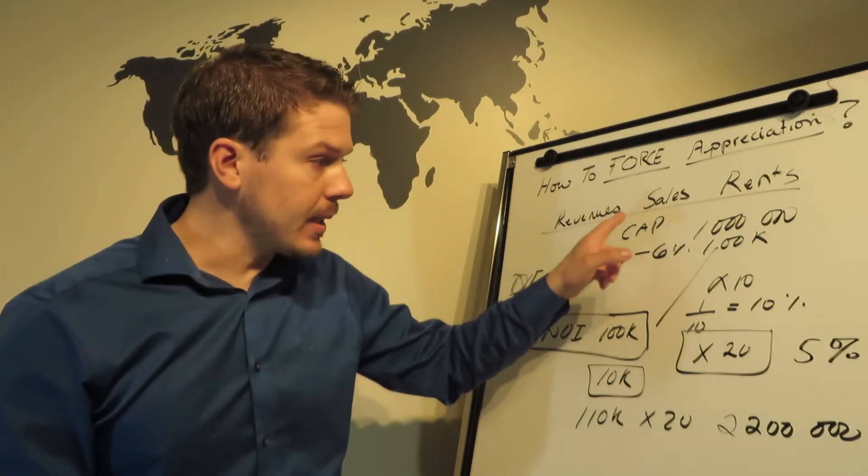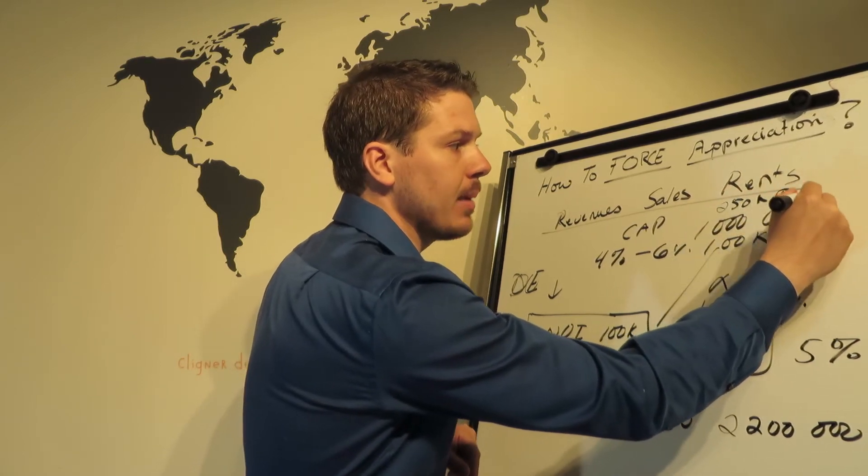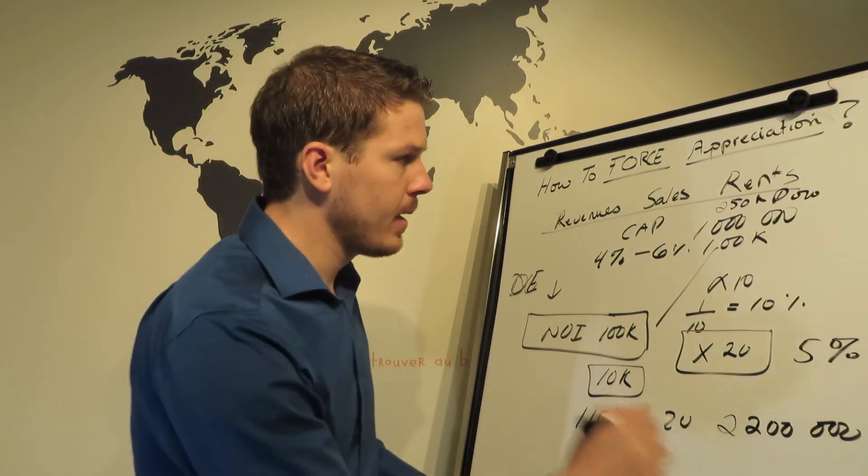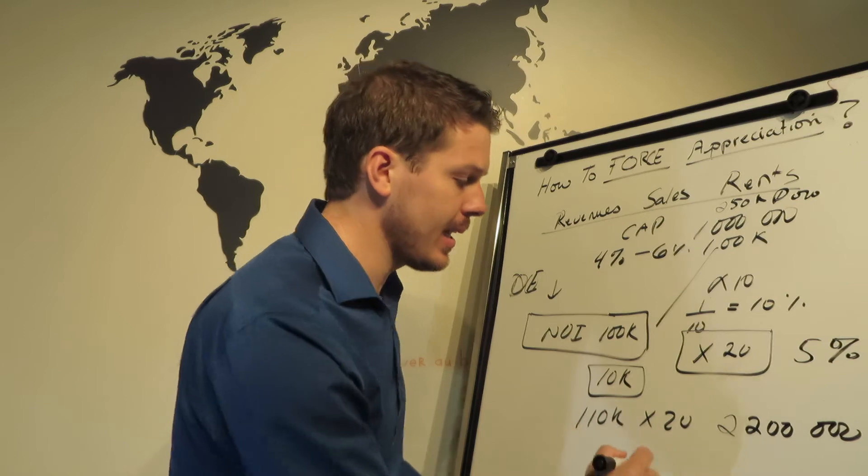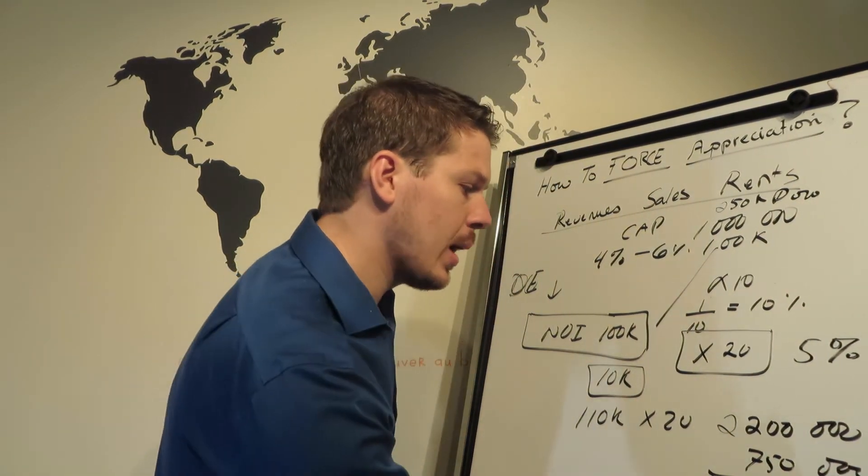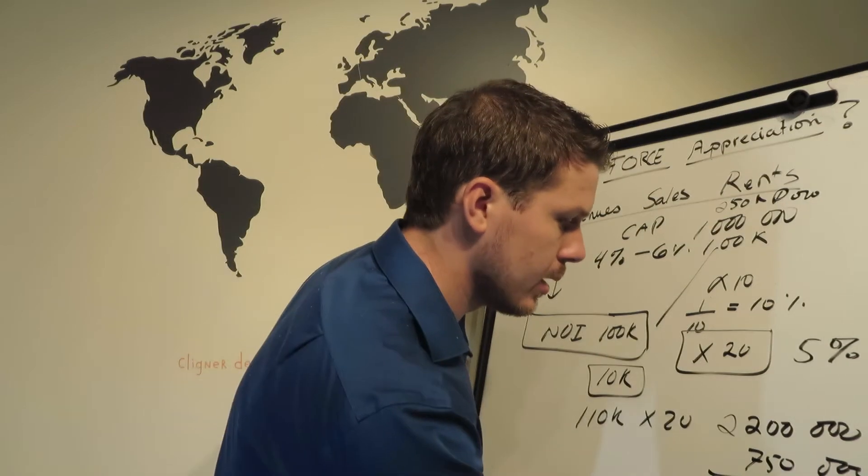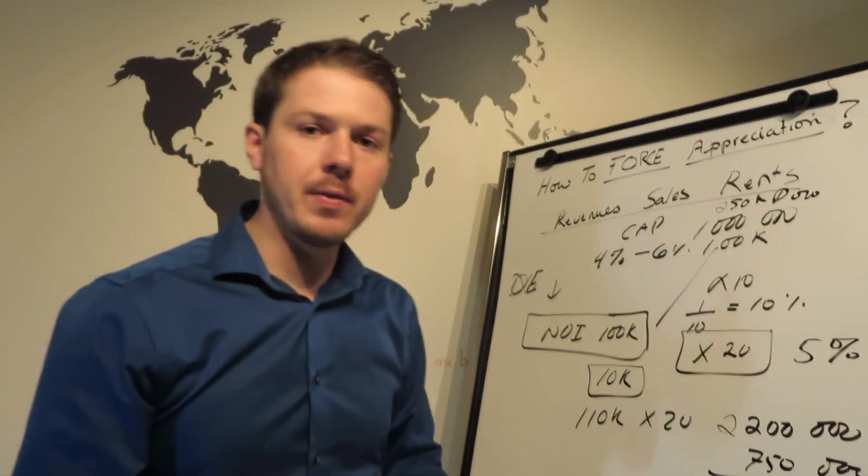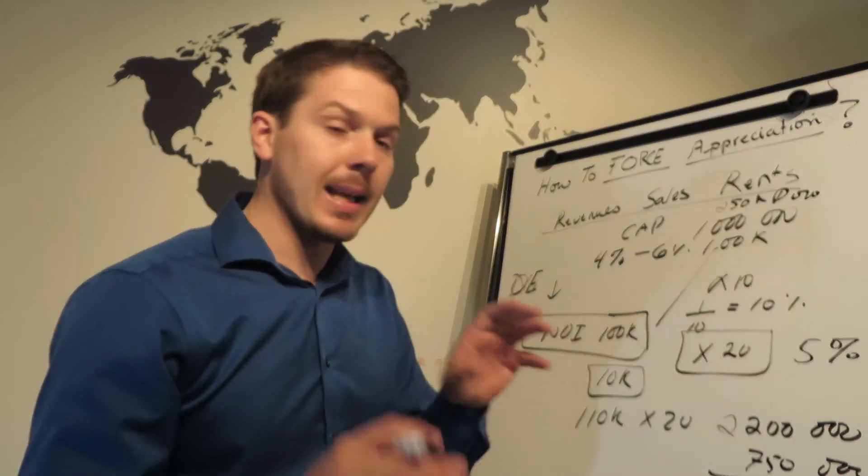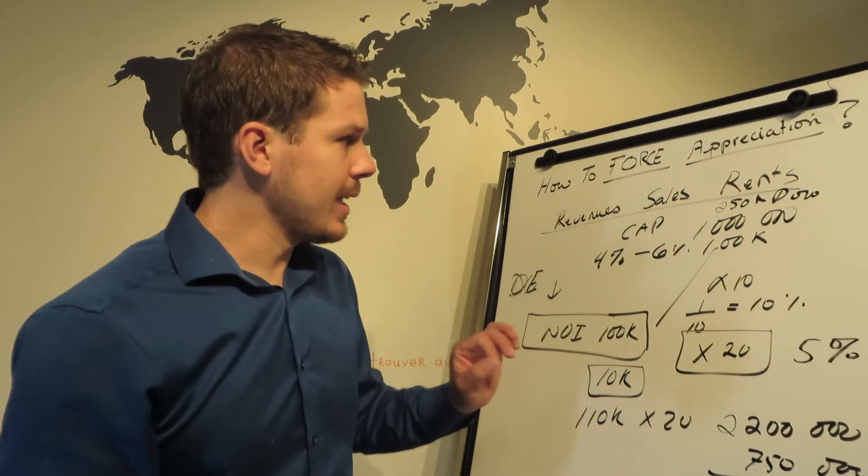So you bought this property for 1 million, you had maybe 250K down payment. Now you sell this business for 2.2 million, you take back, you pay back the debt which was 750K, and now you have 1.45 million. You had 250K, so it's very easy to take a mismanaged - it's not easy, okay - to take a mismanaged business and make it good.